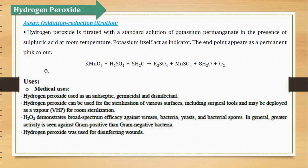Then are the uses of hydrogen peroxide. As antiseptic, germicidal, disinfectant ki tarah use karte hain. Sterilization ke liye use karte hain — surgical tools ki sterilization karne ke liye aur rooms ki sterilization karne ke liye bhi. Iski property hai ki yeh broad spectrum activity show karta hai against virus, bacteria, yeast, bacterial spores ke against. Gram negative aur gram positive dono tarah ke bacteria ke against yeh active hai.